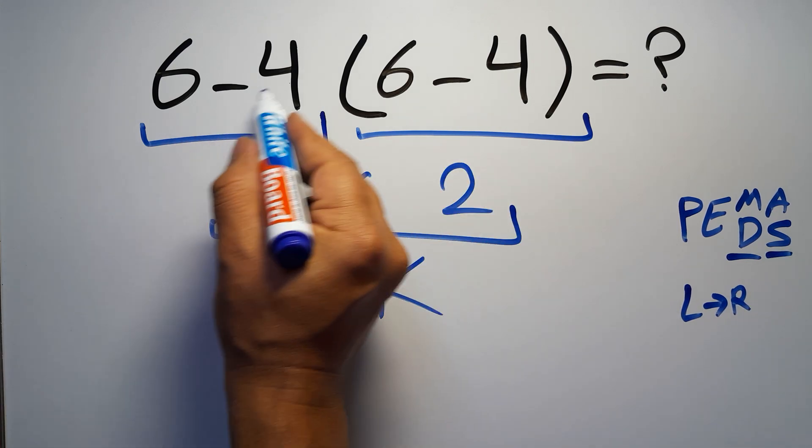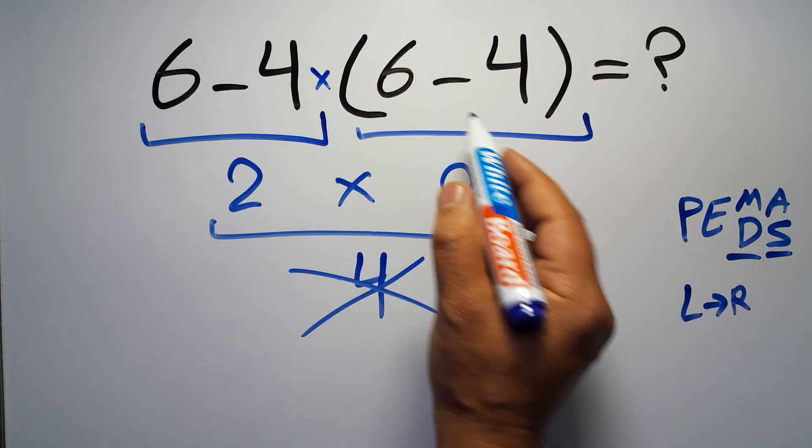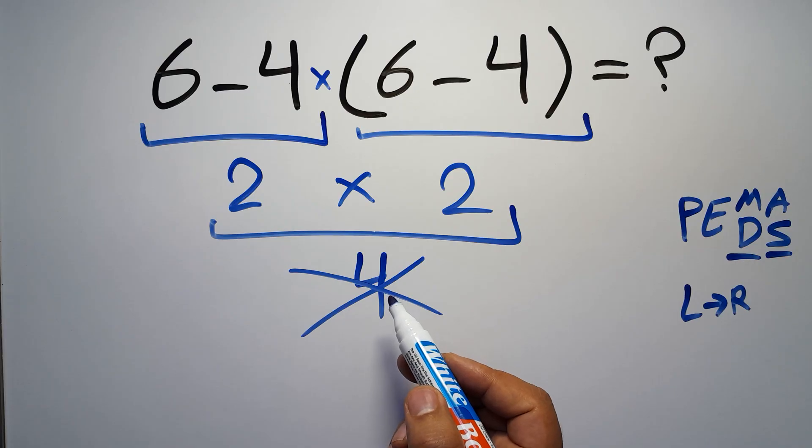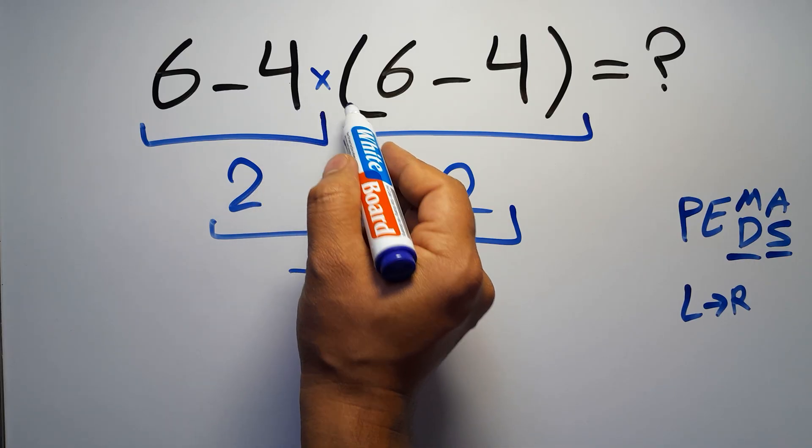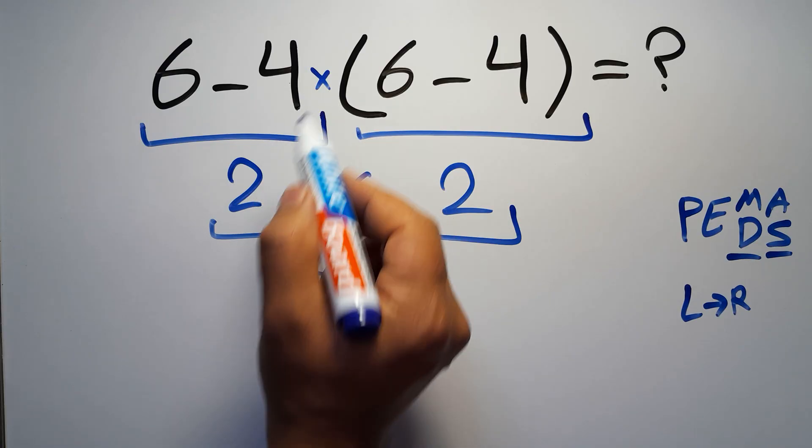In this expression we have one subtraction, one multiplication, and one parentheses. Inside this parentheses we have one subtraction. Here we have a multiplication, because in mathematics when a number is placed next to parentheses it means multiplication, and we usually don't write the multiplication sign for brevity.